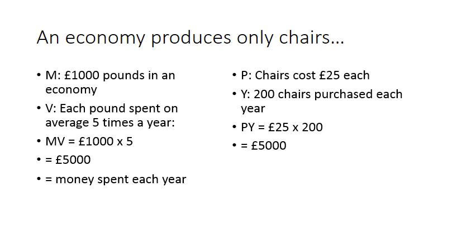But notice here we're talking about exactly the same thing. We've got 200 chairs that are purchased each year at £25 each, that makes £5,000 total spending. So again that £5,000 is just a total amount of money spent each year. All we've done is represent the same thing in two different ways. On the left-hand side, we've measured it in terms of money and how quickly it's spent. On the right-hand side, we've measured it in terms of production and price level.